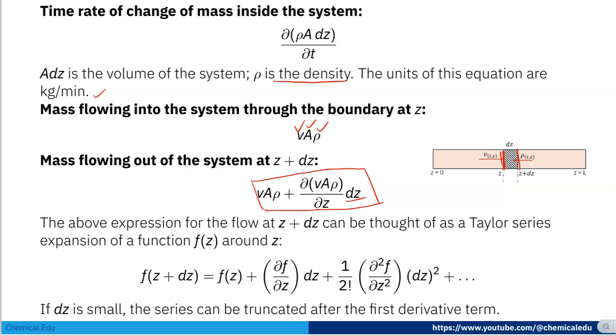The above expression for the flow at z + dz can be thought of as a Taylor series expansion of the function f(z) around z. f(z + dz) = f(z) + ∂f/∂z·dz + 1/2·∂²f/∂z²·(dz)² + ... Since dz is small, we only take the first two terms.